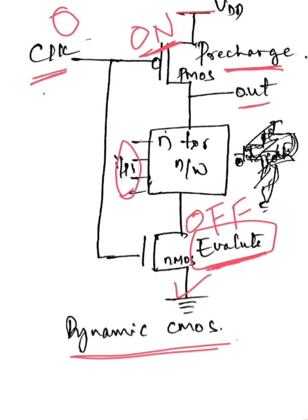In place of the N transistor network, that is the pull-down network, if you put the transistor connections as per our logic, this dynamic CMOS is going to work as per the logic we write.